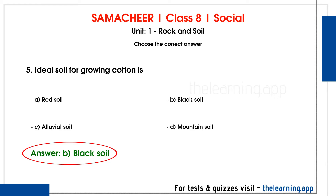Now we will study igneous rocks. What are igneous rocks? Magma is a semi-liquid material inside the earth. When magma comes out of the earth's surface and solidifies, igneous rocks are formed. The weathering of igneous rocks produces black soil.